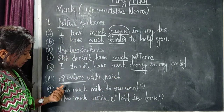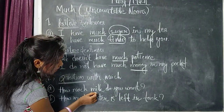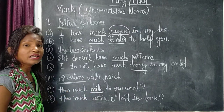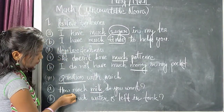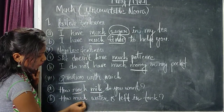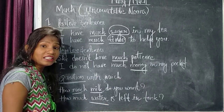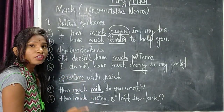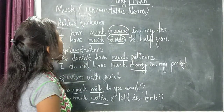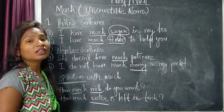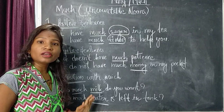In question type sentences: 'How much milk do you want?' Milk also does not have S or ES — milk is an uncountable noun, so we use much. Second example: 'How much water is left in the tank?' Water does not have S or ES written — only water. So water is an uncountable noun, that's why we use much here.